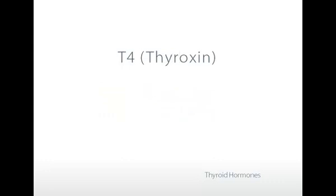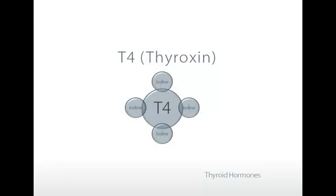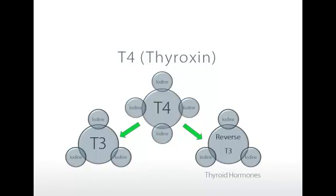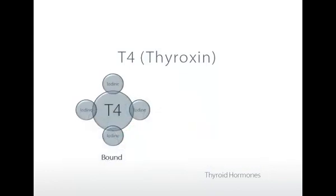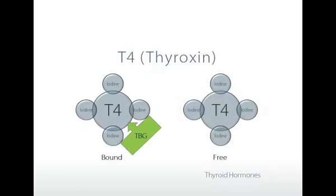Let's talk about these hormones. T4, also known as thyroxine, is the primary thyroid hormone — also known as the mother or pro-hormone. It has four atoms of iodine attached to it. It's called the pro-hormone because all other thyroid hormones are made from T4; it makes T3 and also reverse T3. When you see T4 or thyroxine on a lab test, that value represents both the bound T4 and the free T4. The bound T4 is primarily bound to a protein called TBG, or thyroid-binding globulin.